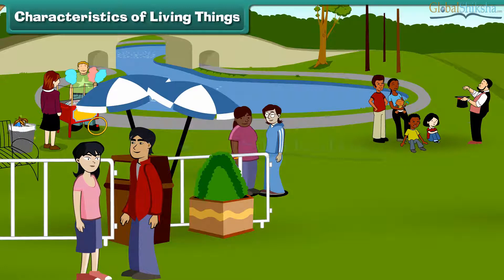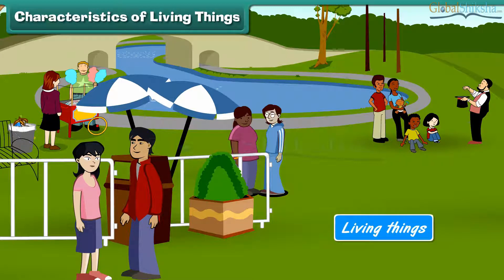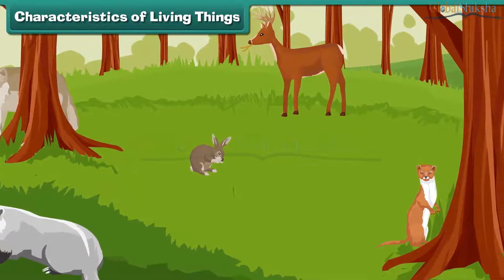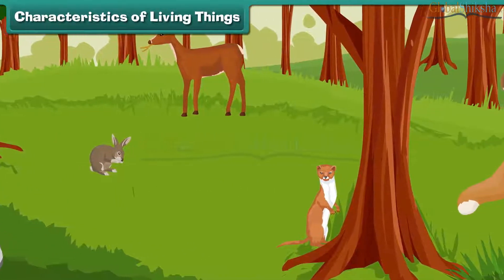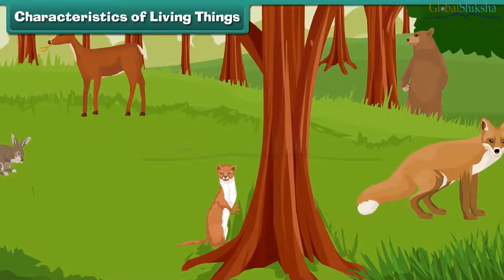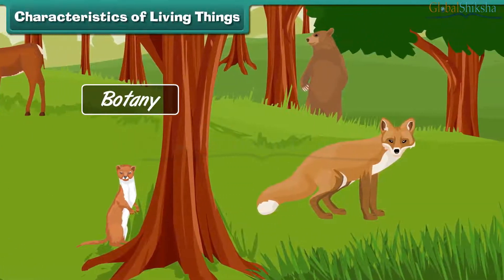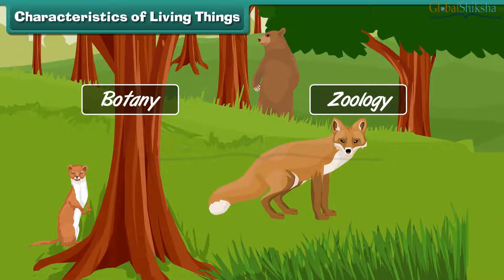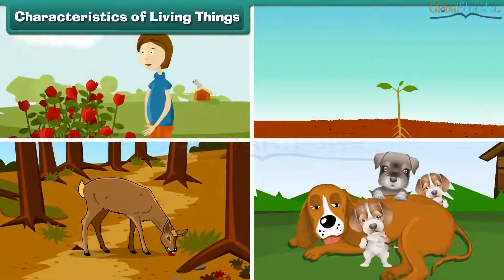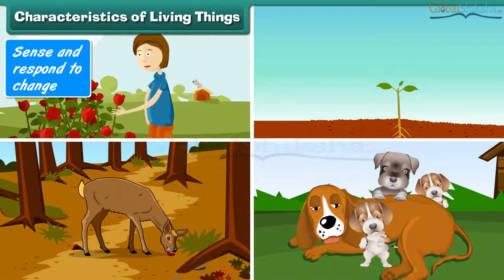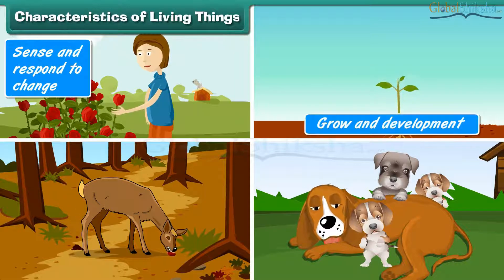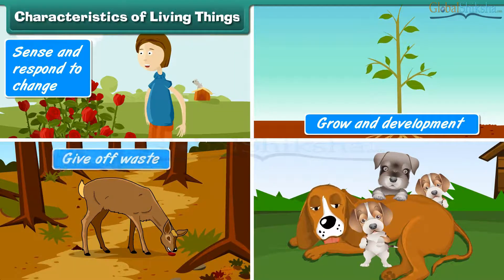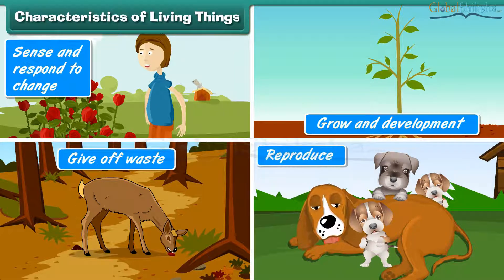Characteristics of living things: Things which depict growth, reproduction, ability to sense the environment, and mount a suitable response are called living things. Plants and animals both are living. Therefore, biology deals with the study of both plants — botany — and animals — zoology. All living organisms share the following basic characteristics: sense and respond to change, growth and development, give off waste, and reproduce.